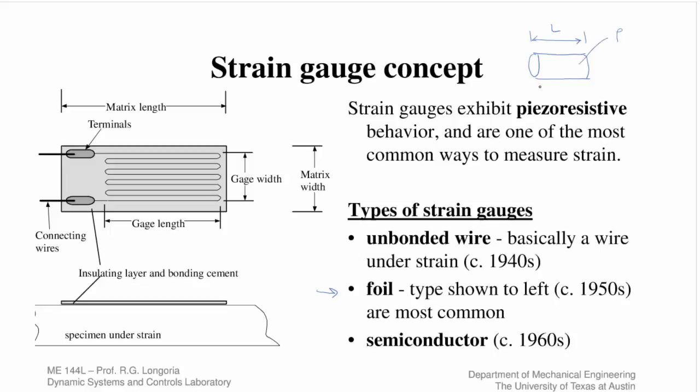You know from past courses in circuits, if you have a length of material, it has some resistivity, some area. The resistance is rho L over A. So you can see that if I stretch or change the geometry in any way, I'm going to change resistance. That's how the very first concept of just a wire being used to measure strain was used to measure force and deflection of materials.